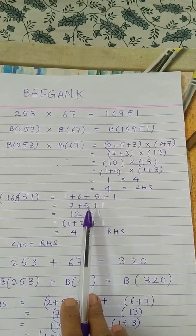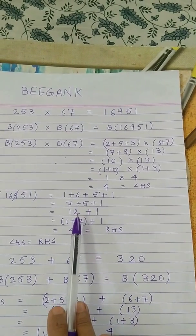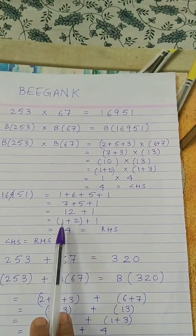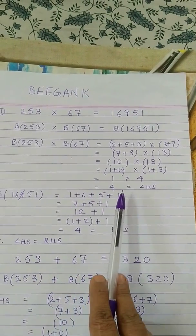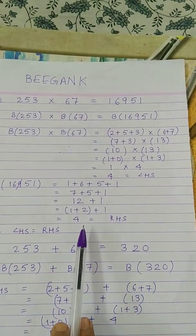So here we go, 1 plus 6 plus 5 plus 1, that is 7 plus 5 plus 1, we get 12. Reduce it to a single digit, so 1 plus 2 plus 1, that is 4. So as left-hand side we got 4, right-hand side we got 4, so LHS equals RHS. Our answer is correct.